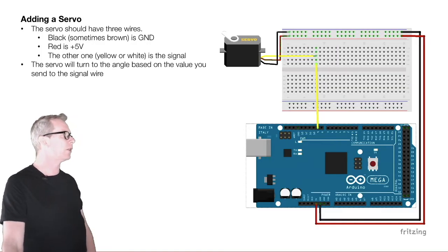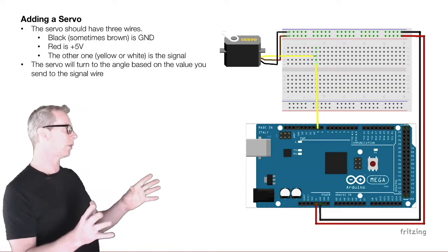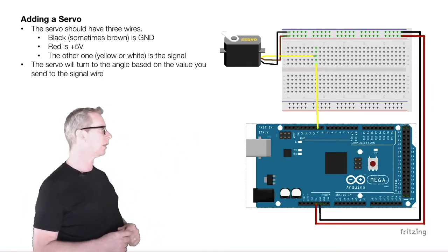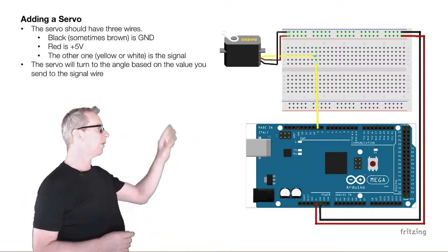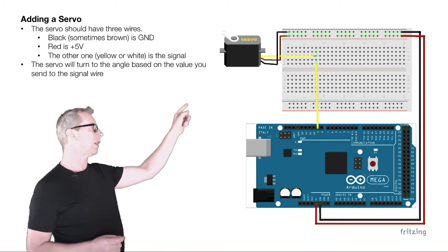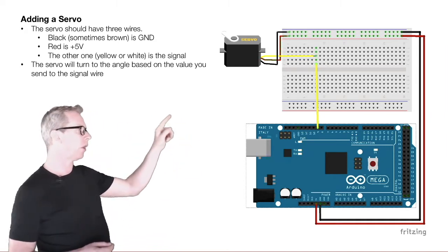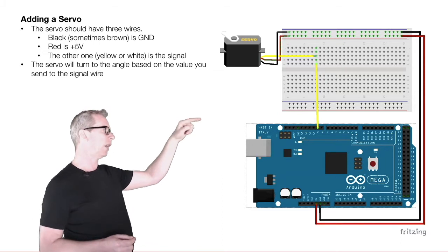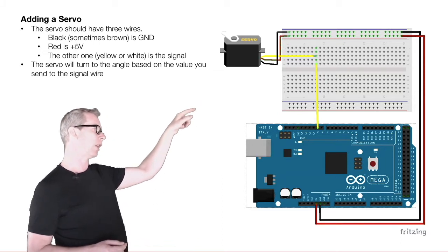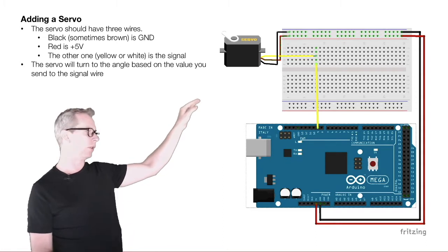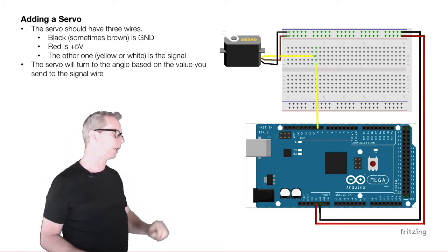The next one I'm going to show is the servo. I've already hooked this up. This is the simplified diagram of what that looks like. We have a servo, which is just a little motor that you control the angle of. You can control that angle by sending a signal voltage on the yellow line, which comes into the yellow or white wire coming out of the servo. It's also got a ground and a plus-5-volt connection, and I've just hooked them up to the Arduino.